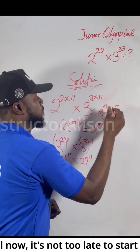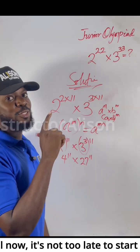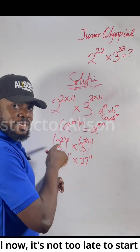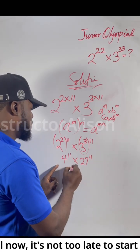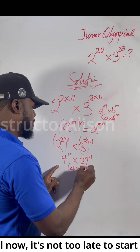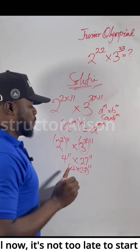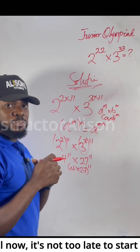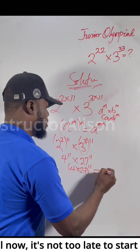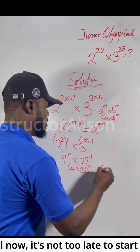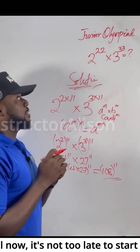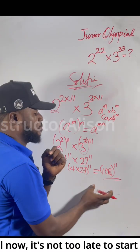The powers are the same, the bases are different. So just say 4 times 27, then pick one of the powers. Now 4 times 27 gives you 108. Take that power, and the answer — after simplifying — comes down to 108 to the power of 11.